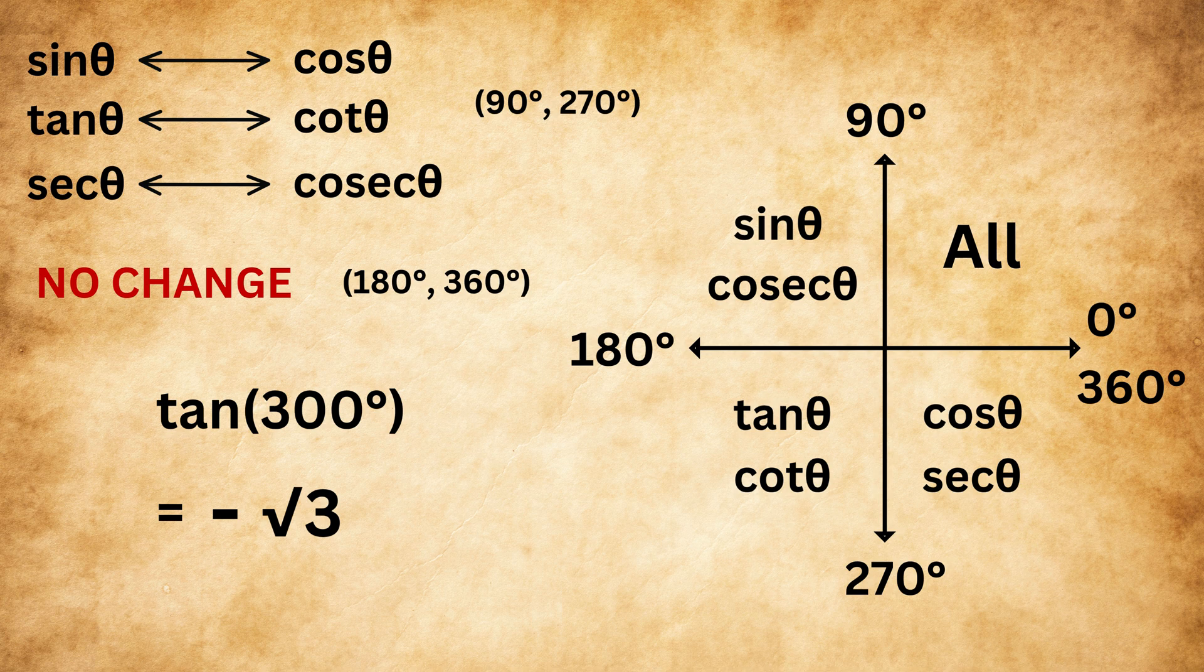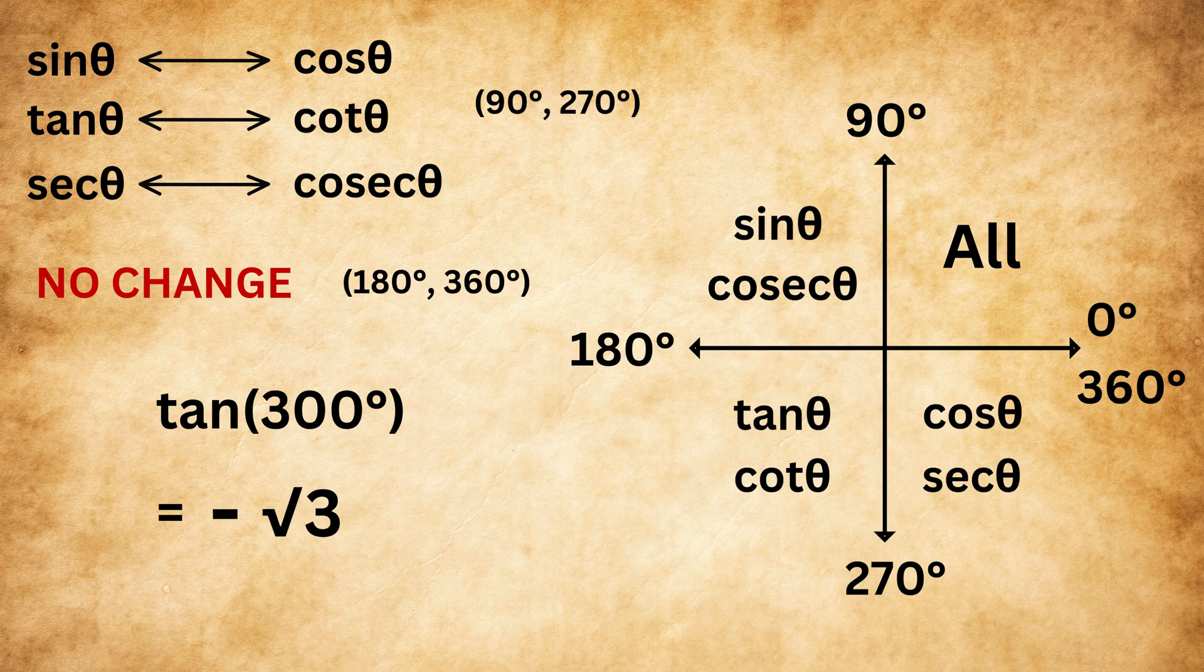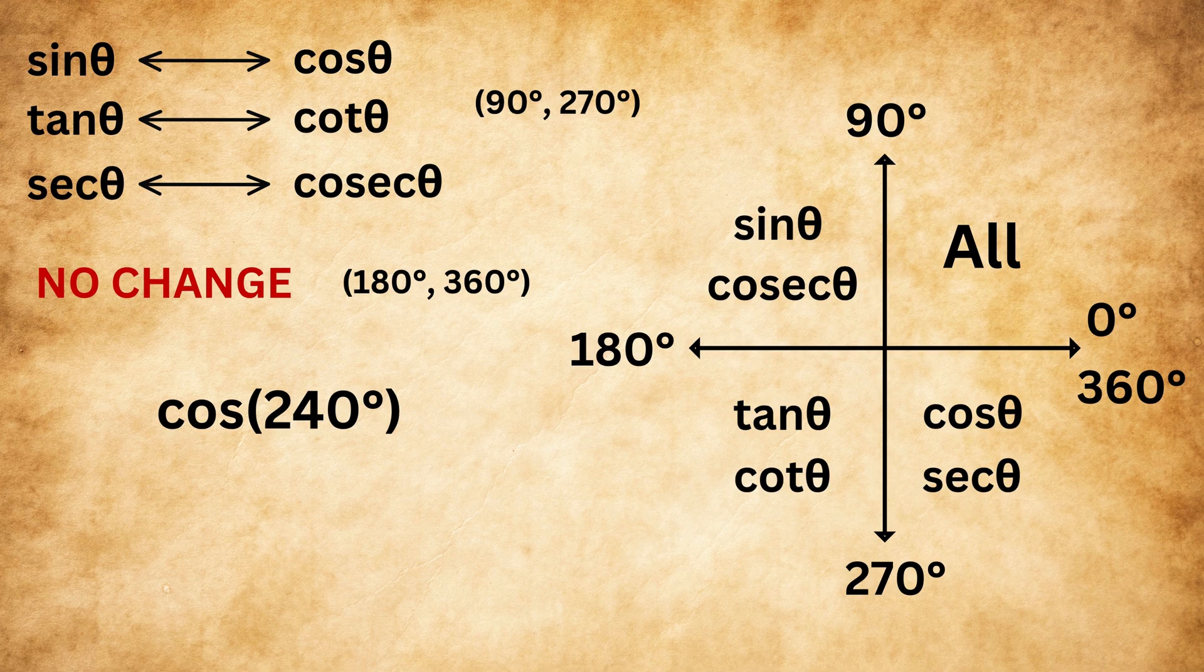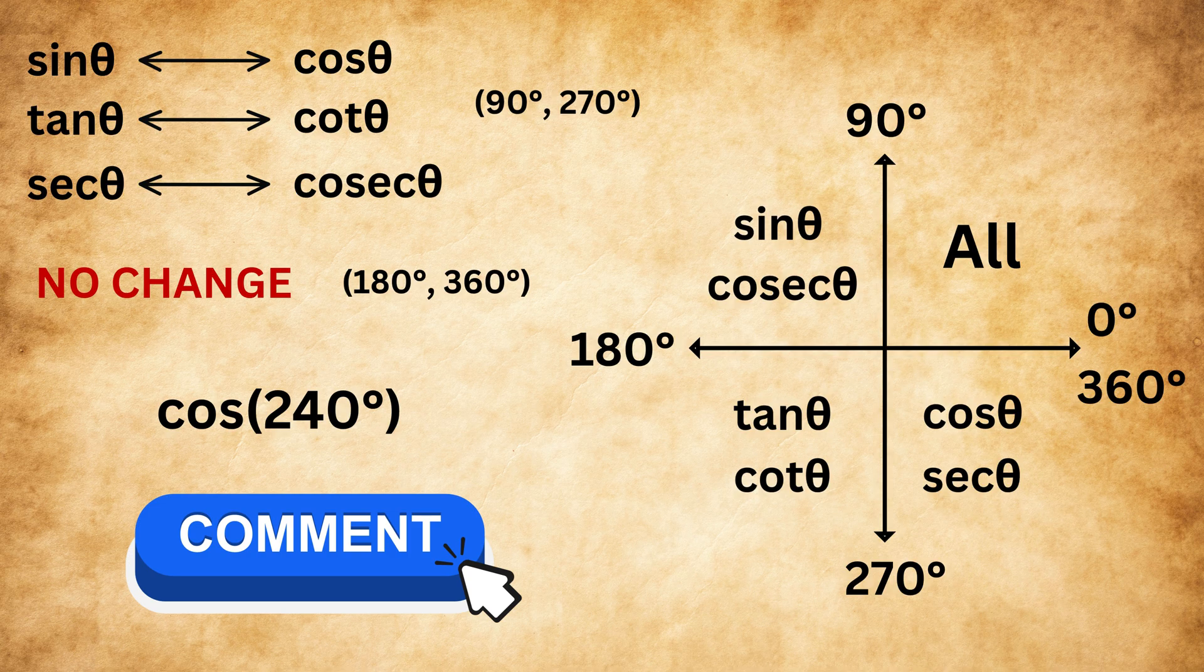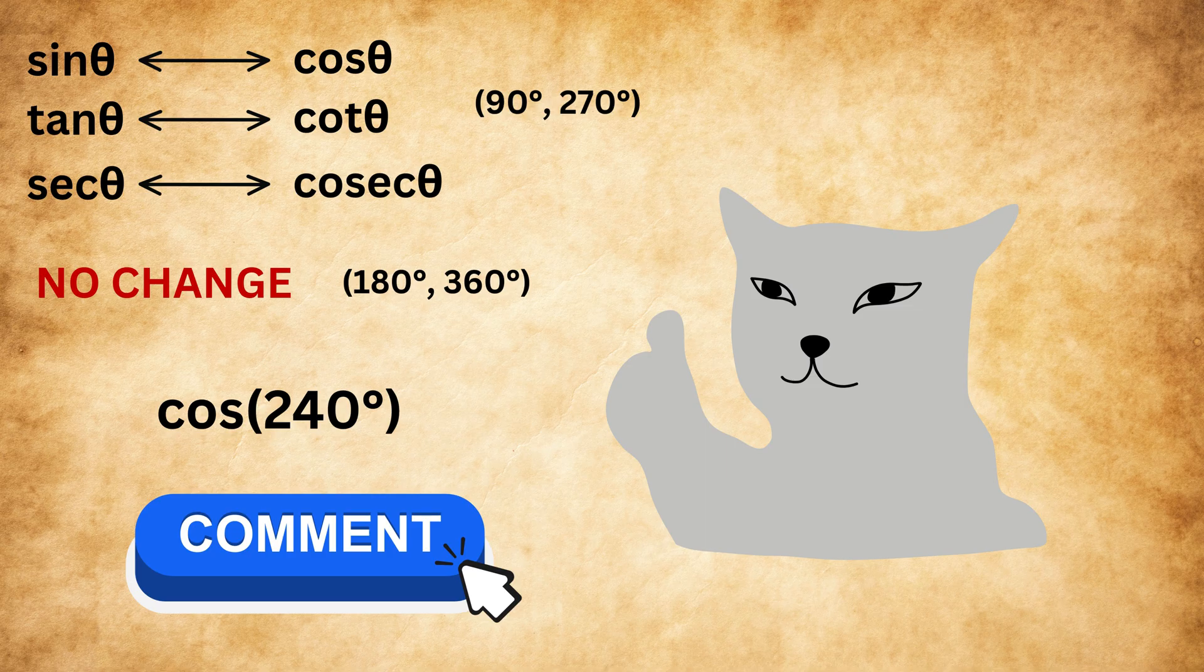So this is how you can easily find trigonometric values for any angle greater than 90 degrees. If this is clear, then find the value of cosine 240 degrees and let me know your answer in the comments.